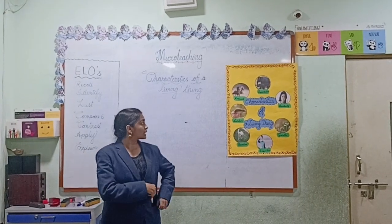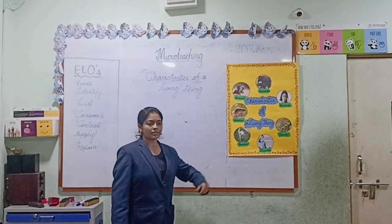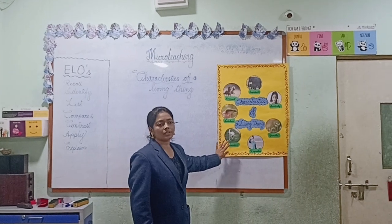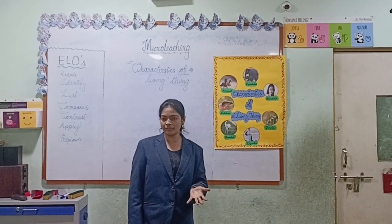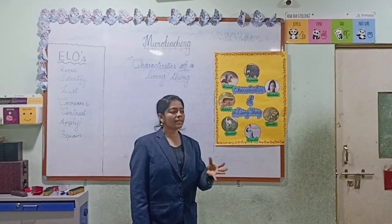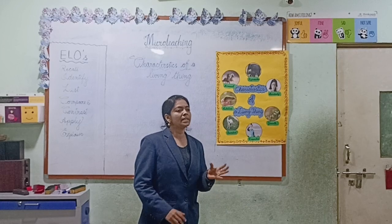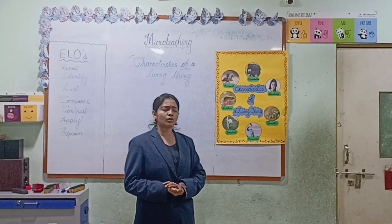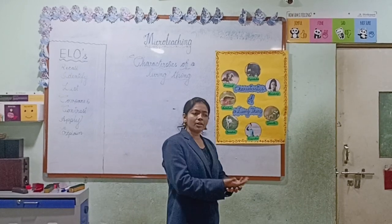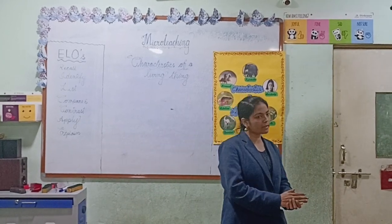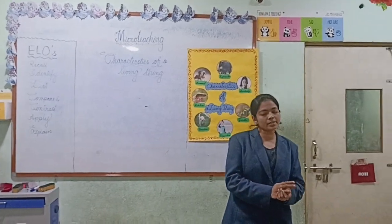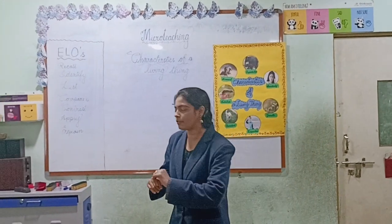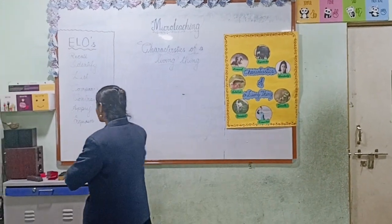Key features or characteristics help us to identify things as living or non-living. Things that are alive are called living things. Things that are not alive are called non-living things.